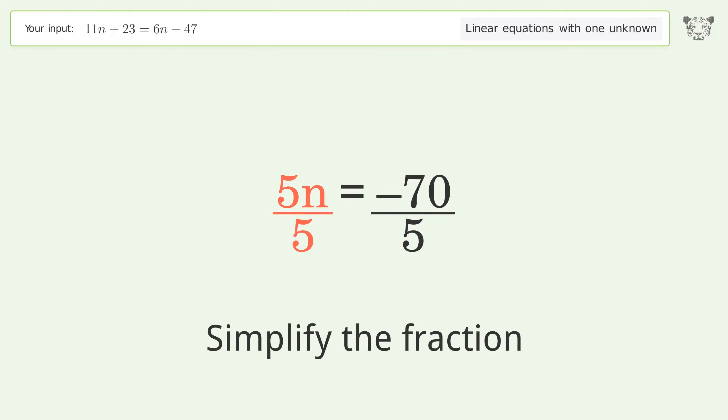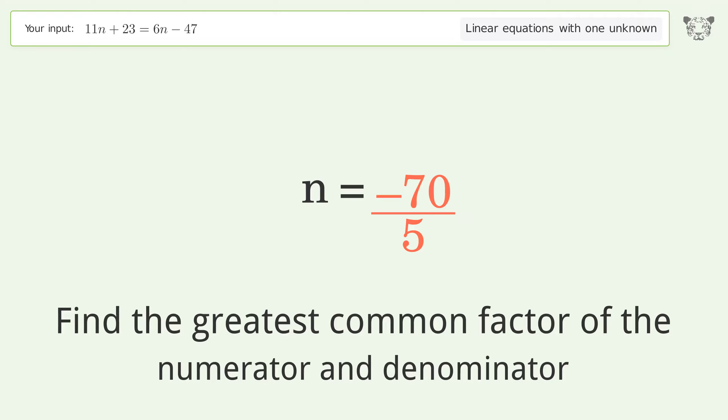Isolate the n. Divide both sides by 5. Simplify the fraction.